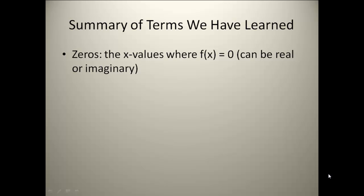Remember that a zero is the x value or values where f(x) is equal to zero, and it can be real or it can be imaginary. A factor is any quantity x minus h equals zero, where h is one of your zeros of your polynomial.